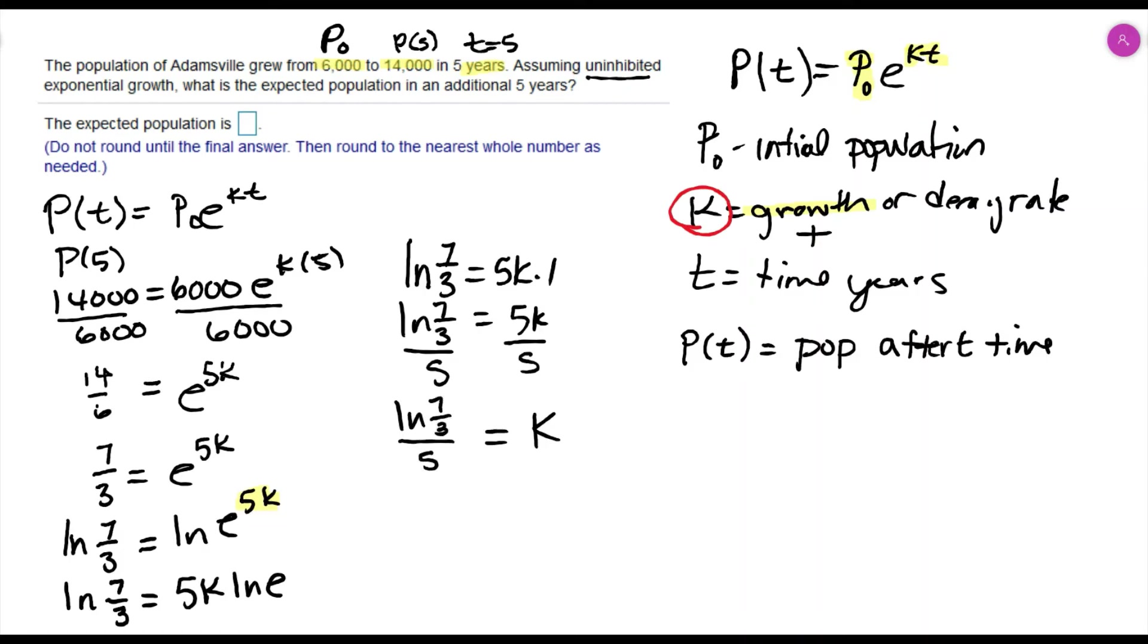Now you could put this in your calculator and get a decimal answer, but I don't want to round until the very end of the problem. The directions say do not round until the final answer, so I'm going to leave this alone for the moment.